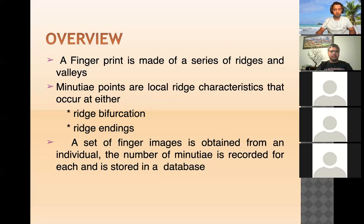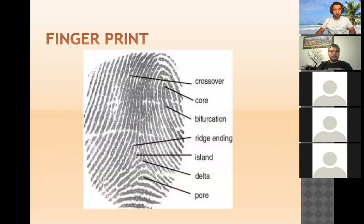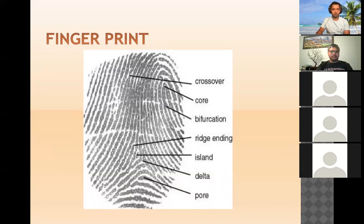A fingerprint is made up of a series of ridges and valleys — those are the technical terms for all the lines we see in our fingerprint. Fingerprints have long been used for identification because of their immutability and individuality. Immutability refers to the permanent and unchanging character of the pattern on each finger, and individuality refers to the uniqueness of the ridge details across individuals.